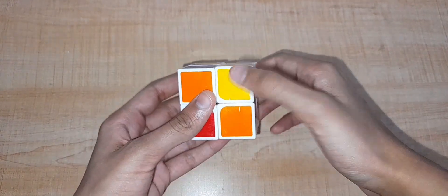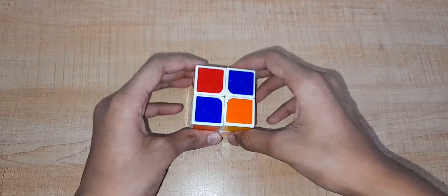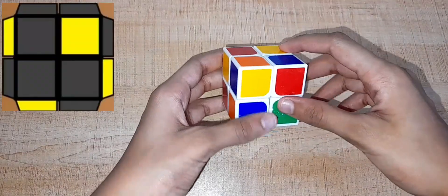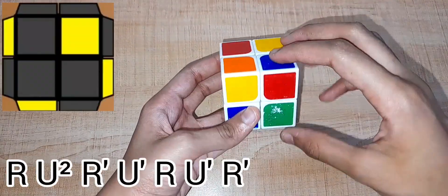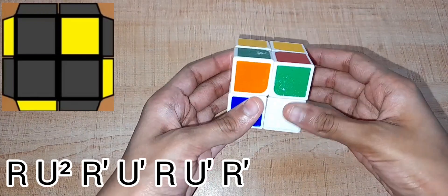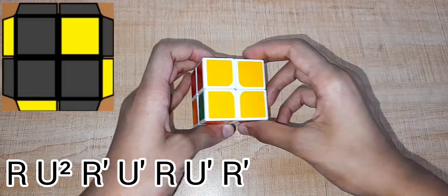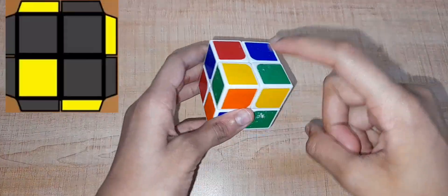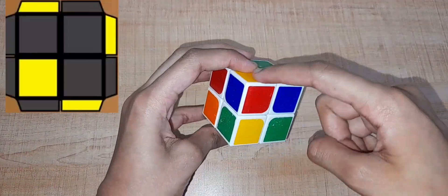Now to solve the opposite side - in this case I have yellow as the opposite side. I'll show you some algorithms. If you have one sticker up and the others are going anti-clockwise, do this. If you have one piece and others are going clockwise, do this algorithm.